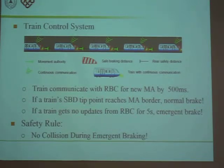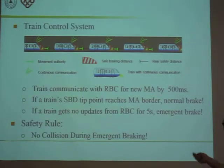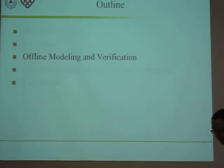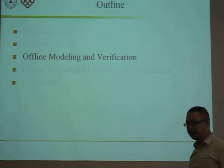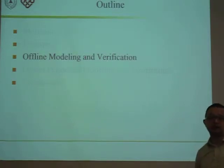The safety rule says no train should collide during emergent braking. The conventional hybrid system model checking is done offline and tries to verify the safety of the system for a time-unbounded future.